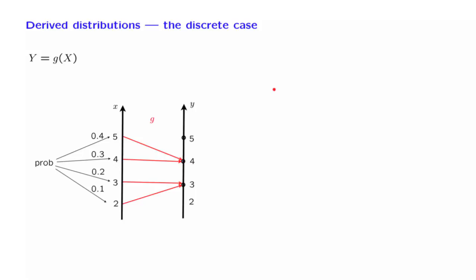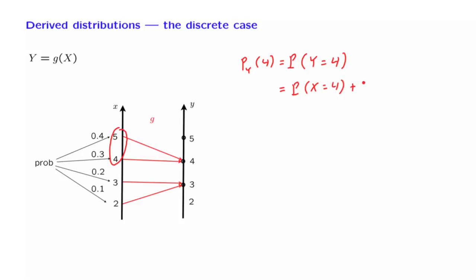Then, for example, the probability that y takes a value of 4 — this is also the value of the PMF of y evaluated at 4 — is simply the sum of the probabilities of the possible values of x that give rise to a value of y equal to 4. Therefore, this expression is equal to the probability that x equals 4 plus the probability that x equals 5, or in PMF notation, we can write it in this manner.